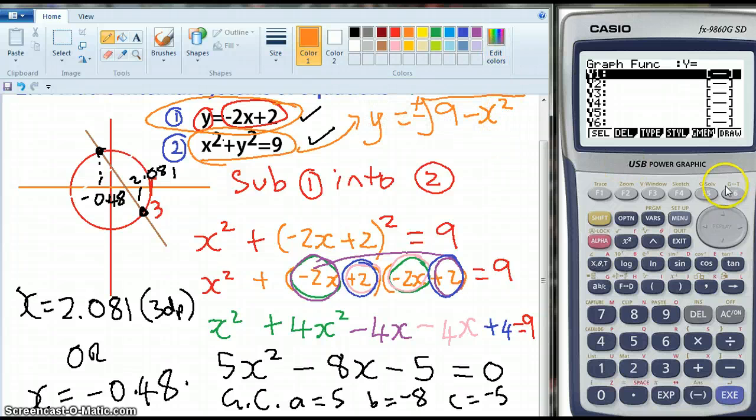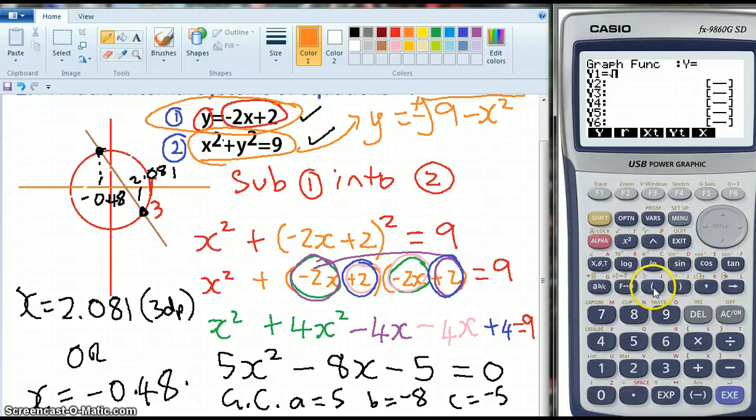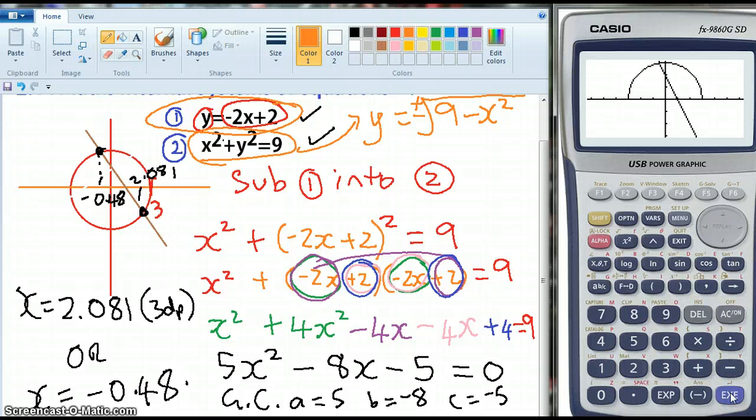Now my calculator can't do plus or minus, I can do half the circle at once. So I'm going to put my square root sign, then a bracket and then my 9 minus x squared and close my bracket and that will give me the top half of the circle and then I'm going to do the line minus 2x plus 2. I'm going to graph that.